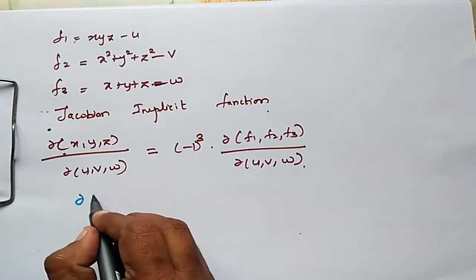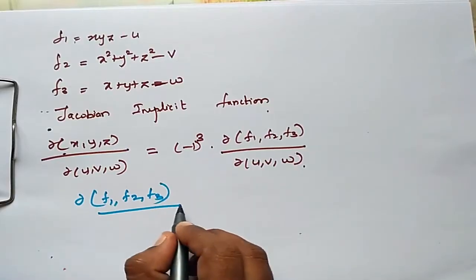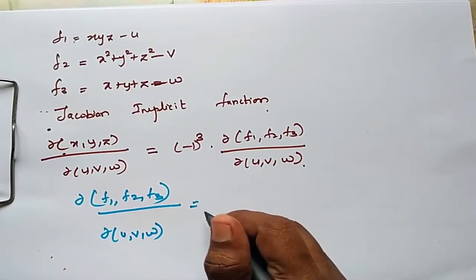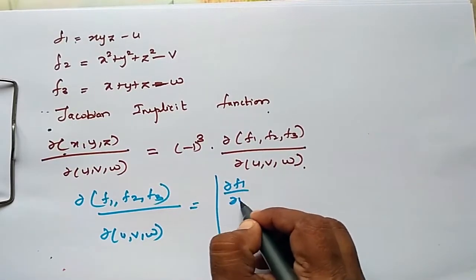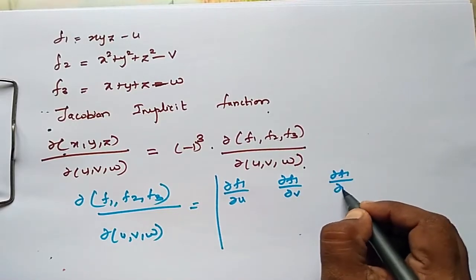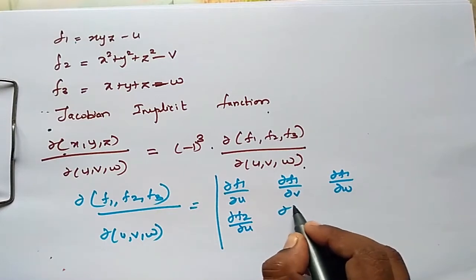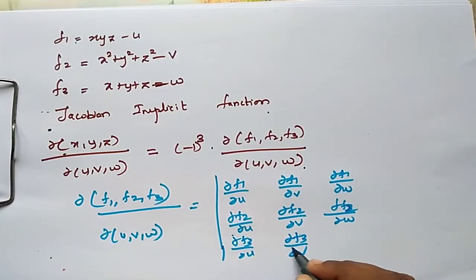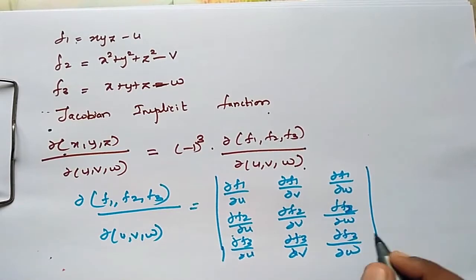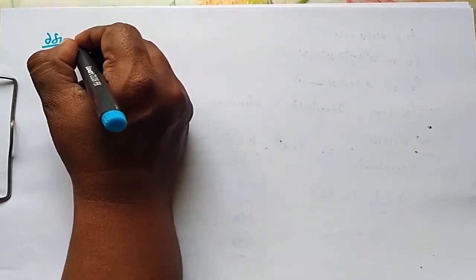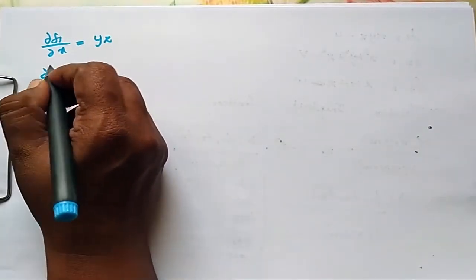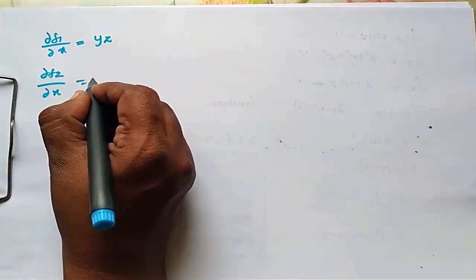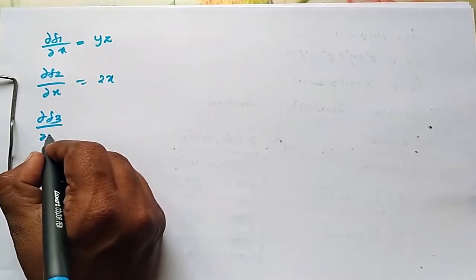So, ∂(f1, f2, f3) / ∂(u, v, w) is equal to the determinant with entries: ∂f1/∂u, ∂f1/∂v, ∂f1/∂w; ∂f2/∂u, ∂f2/∂v, ∂f2/∂w; ∂f3/∂u, ∂f3/∂v, ∂f3/∂w. We can substitute the values: ∂f1/∂x = y·z, ∂f2/∂x = 2x, ∂f3/∂x = 1.